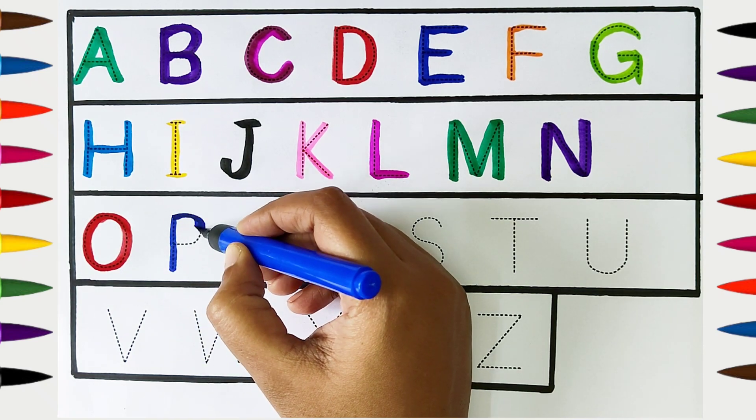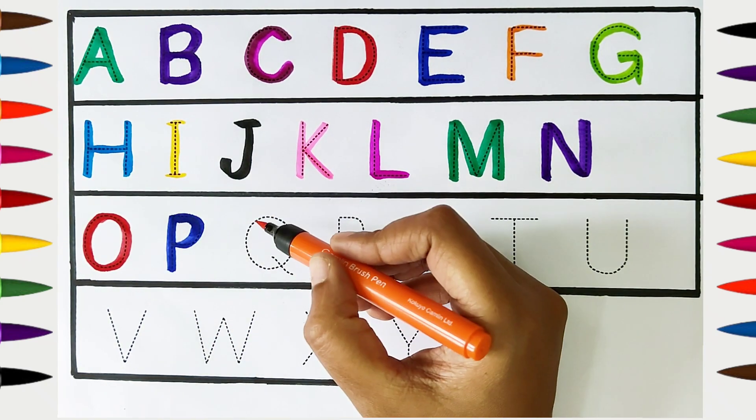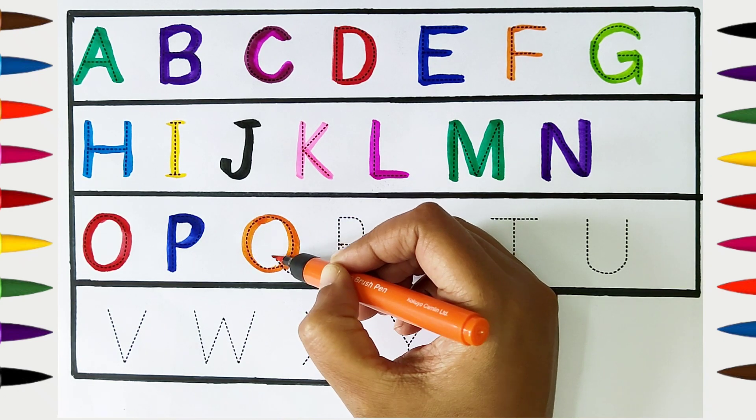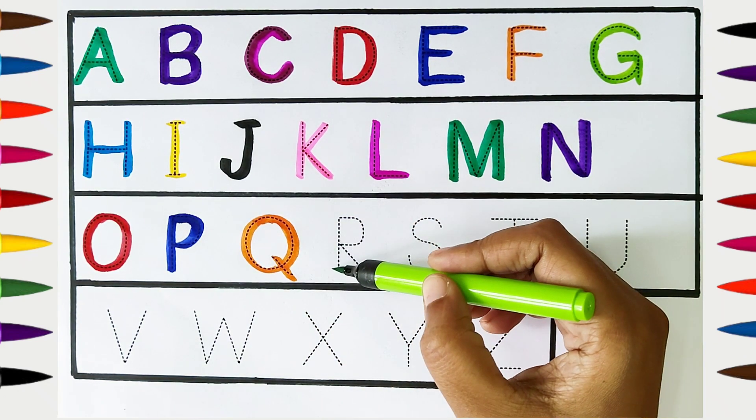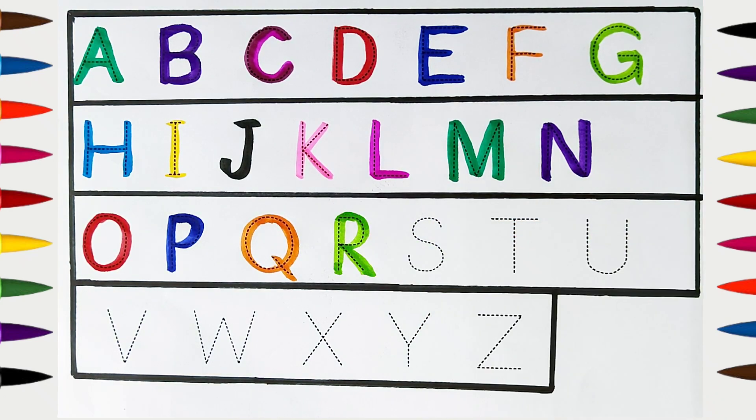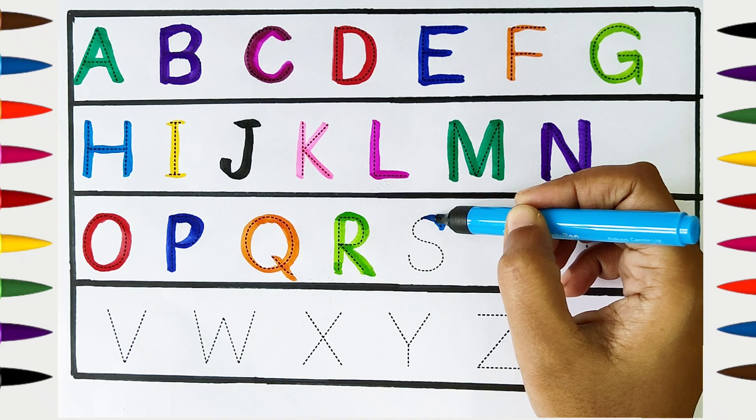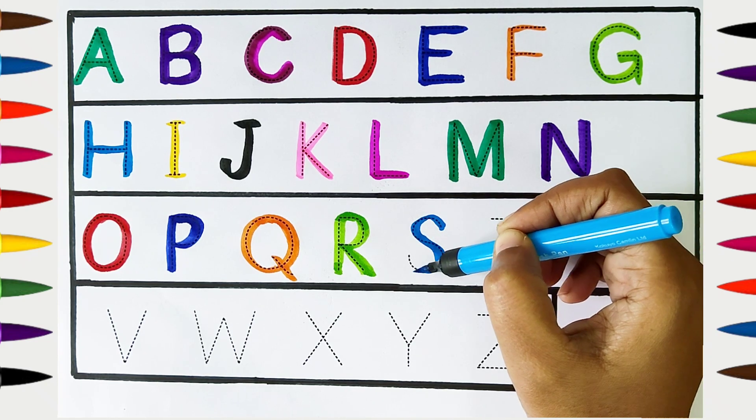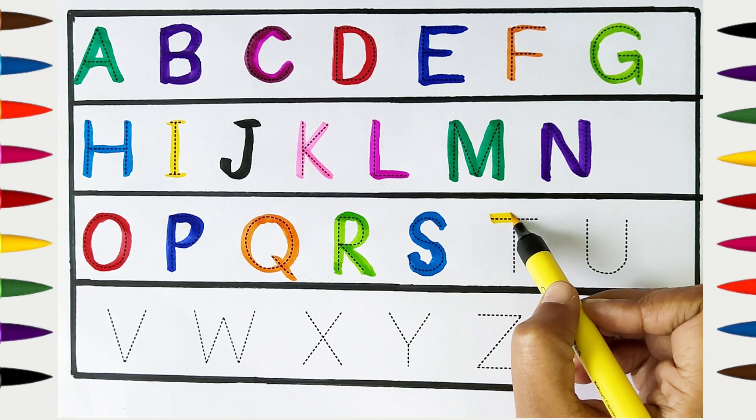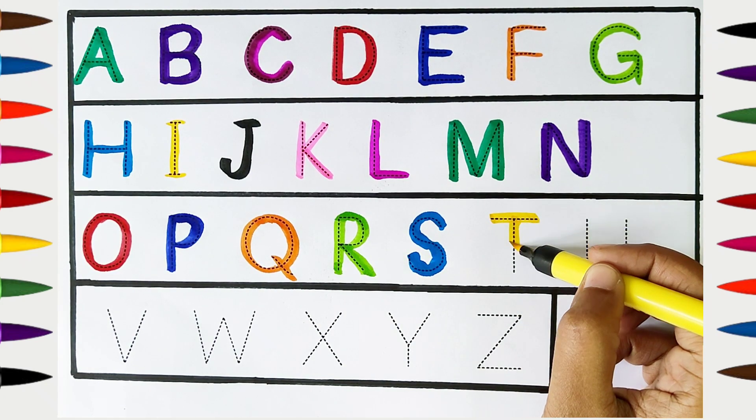P, dark blue color. P is for pig. Q, orange color. Q is for queen. R, light green color. R is for rat. S, light blue color. S is for star. T, yellow color. T is for tiger.